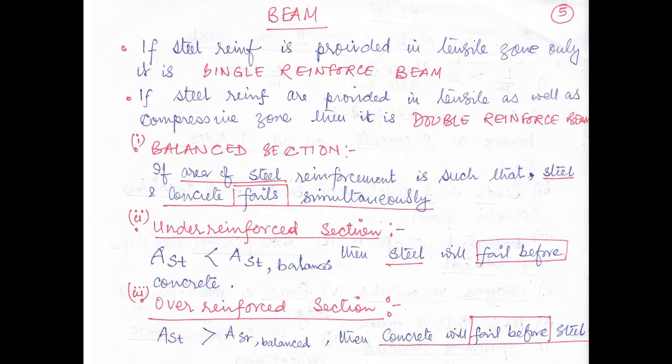Next I will discuss about the balanced section, under-reinforced, and over-reinforced section. In case of a balanced section, the area of steel reinforcement is such that the steel and the concrete fail simultaneously. Please remember this definition: if the area of steel reinforcement is such that steel and concrete both fail simultaneously, it is a balanced section.